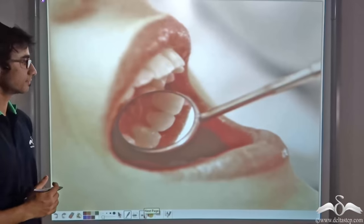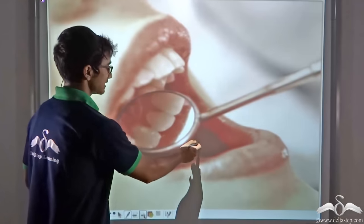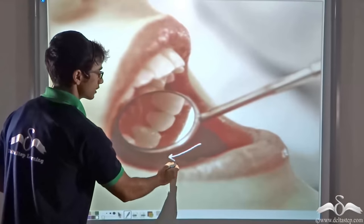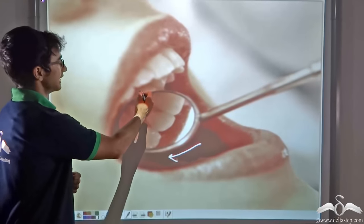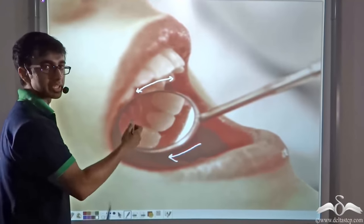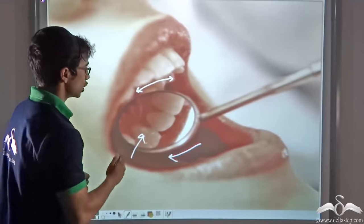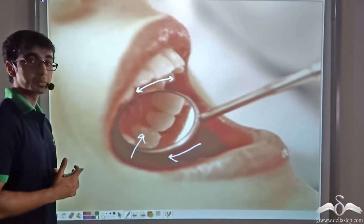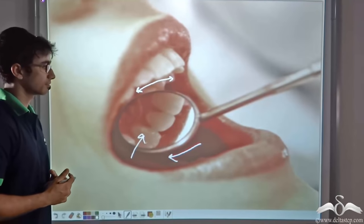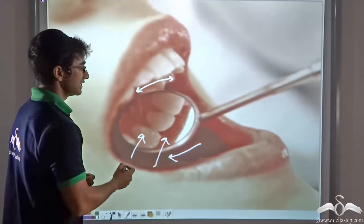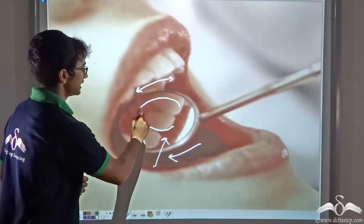Concave mirrors are also used by dentists. As you can see in this picture, the dentist is holding a concave mirror inside the mouth of the patient. The object — that is, the teeth — is very close to the mirror. The object is so close that it is in between the focus and the pole of this concave mirror. When the object is in between the focus and the pole, the image formed is virtual, erect, and enlarged. This enlarged virtual image enables the dentist to see and examine your teeth better.